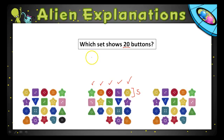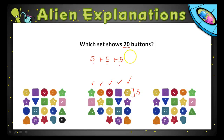So we have five plus five plus five — that's five, ten, fifteen — plus five equals twenty.